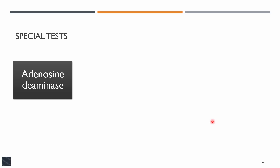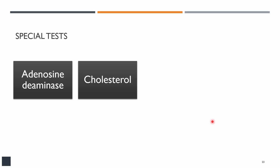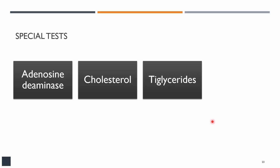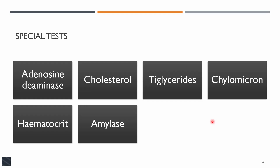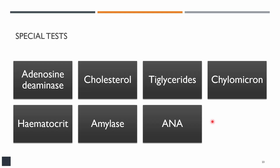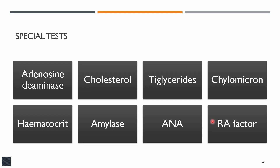Certain specific tests can help identify the cause: adenosine deaminase (ADA) levels are increased in tuberculous pleural effusion. Cholesterol levels, triglyceride levels, and chylomicrons can be increased in chylothorax or pseudo-chylothorax. Hematocrit is used to identify hemothorax. Amylase is increased in pancreatitis-related effusion. ANA in pleural fluid can identify SLE-related effusion, and rheumatoid factor can identify rheumatoid arthritis-related effusion.